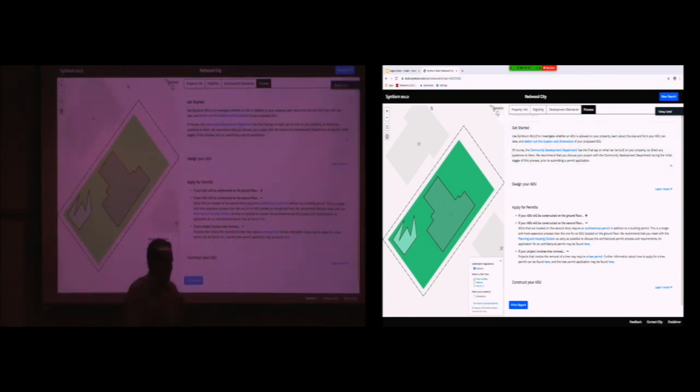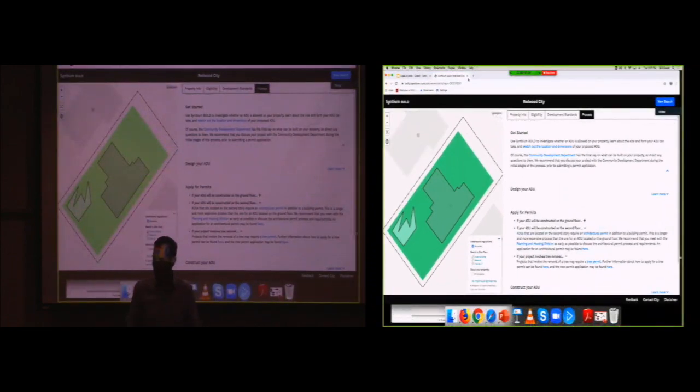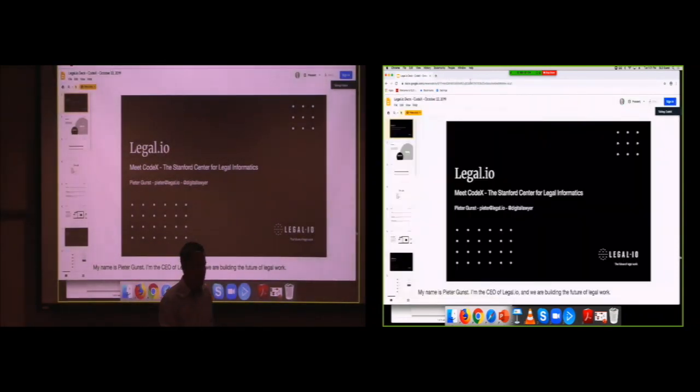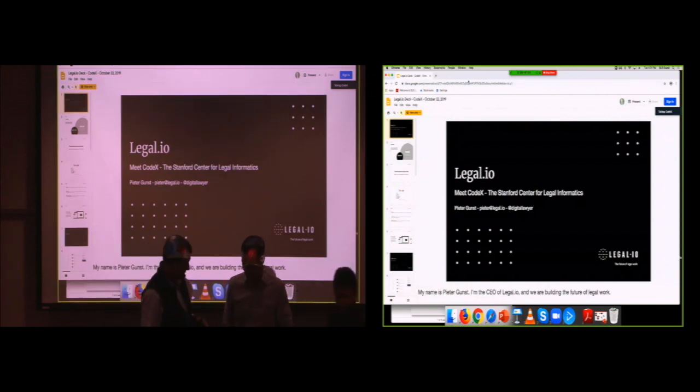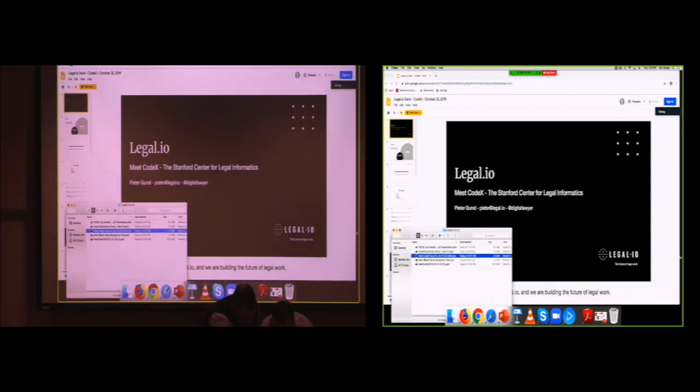So we feel at Codex that this is really the future of computational law. It's giving systems into the organizations and institutions that produce law and help them make those laws more accessible to the people who are actually the subjects of those laws. So I think Symbium is really the paragon of that movement, and we're very excited about it. Next up is Mike, who will tell us about the work of our blockchain group.